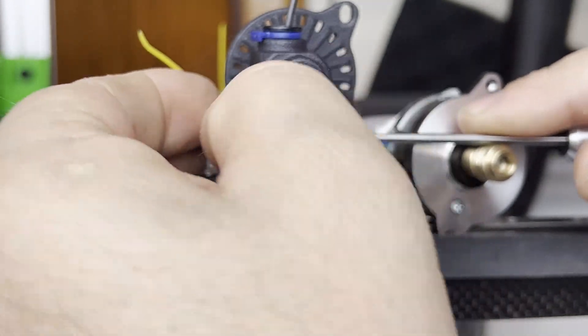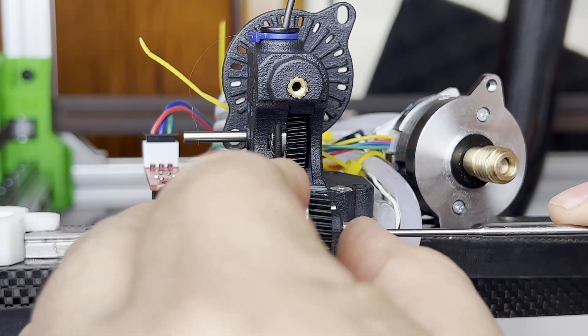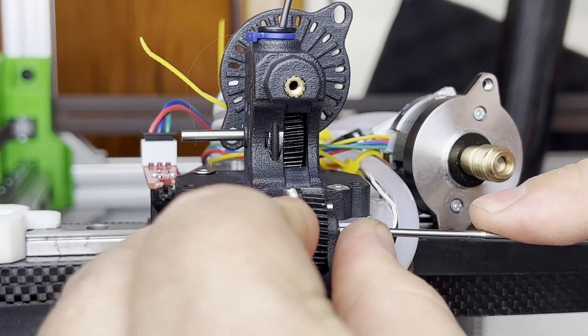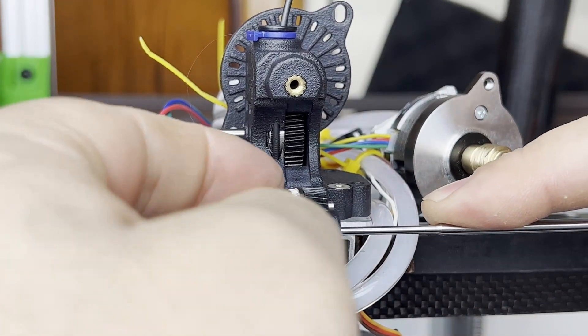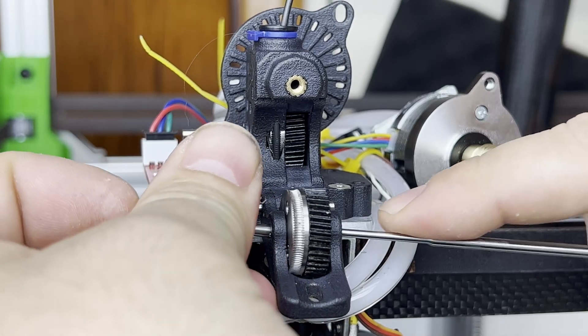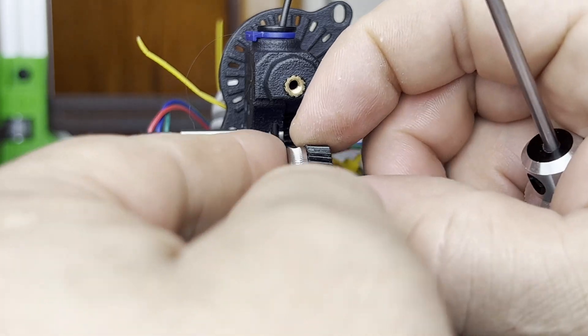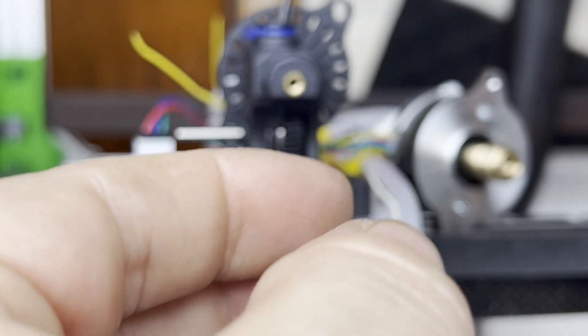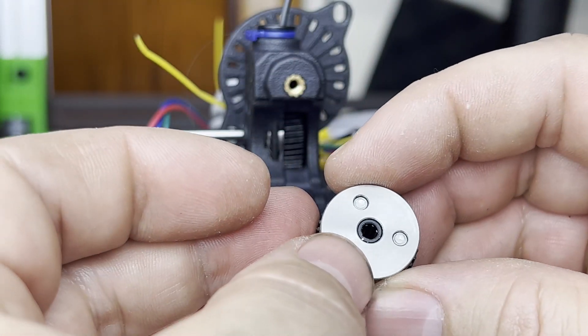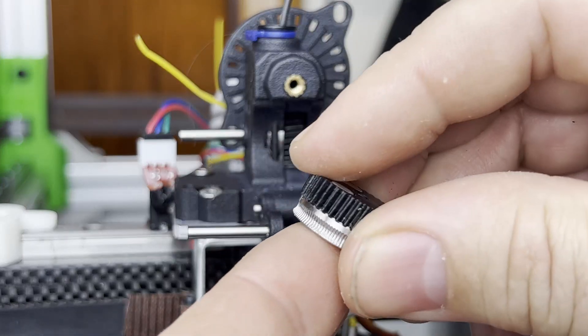...push out this pin. Pop the wheels out. Now just be careful when you pop the wheels out because they have a bearing in them which tends to disappear when you turn them on their face.